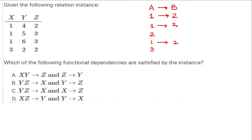They have given you an instance with four options, asking which functional dependencies are satisfied. Let's check option A: XY→Z. The XY combinations — (1,4), (1,5), (1,6), (3,2) — are all different, so that is fine. But checking Z→Y: Z has value 2 appearing twice and 3 appearing twice. If 2 in Z gives you 4, then anywhere 2 appears in Z it should give you 4 only — but here it gives 2 as well. So Z is not functionally dependent on Y, and option A is cancelled out.